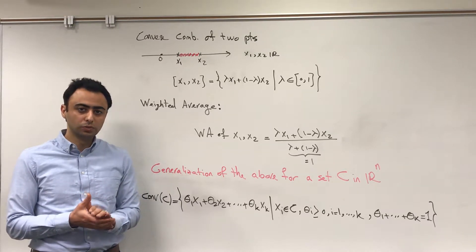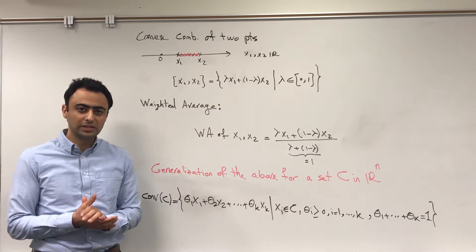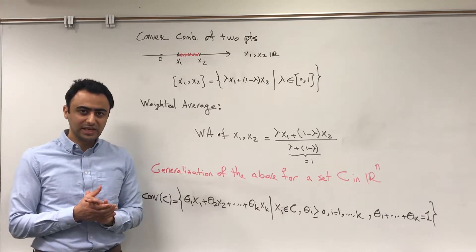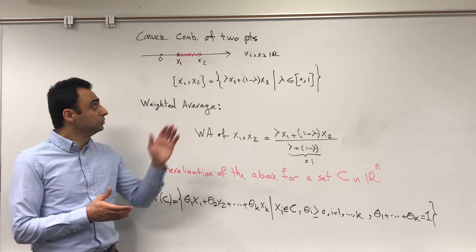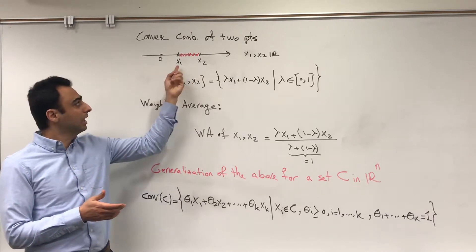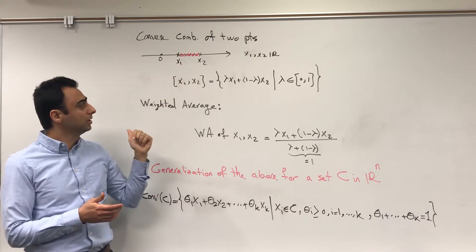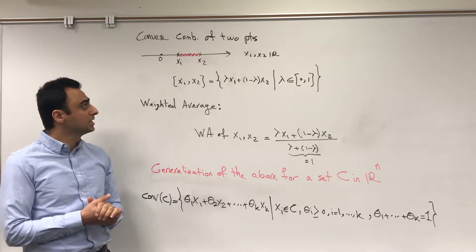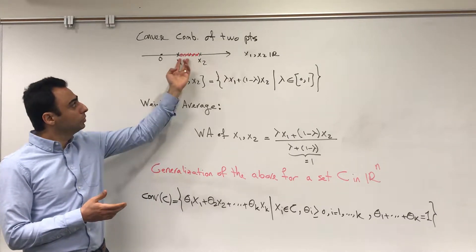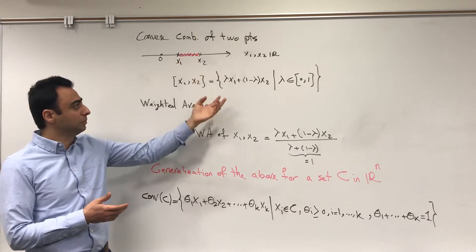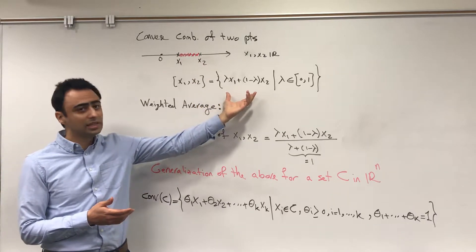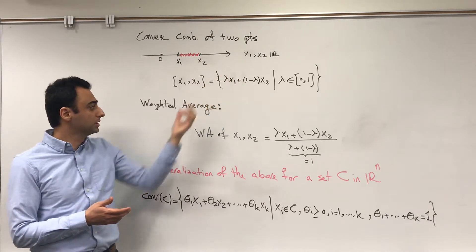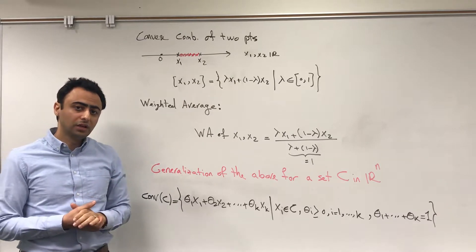To understand the convex hull we have to understand the notion of convex combination of two points. I'll give you the easiest example on the real line. Let's say we have x1 and x2 on the real line. The convex combination of these two points is all points between x1 and x2, and mathematically we write this as a set.